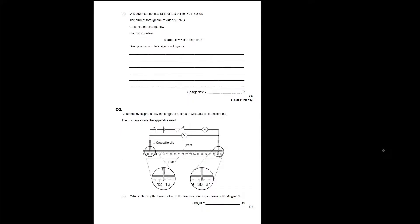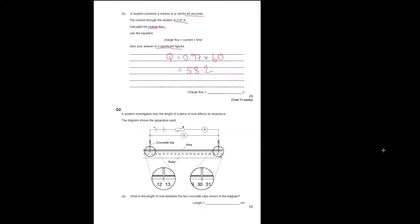A student connects a resistor to a cell for 60 seconds. The current through the resistor is 0.97 amps. Calculate the charge flow using Q = It, giving your answer to two significant figures. Substituting: charge = 0.97 × 60 = 58.2. Remember, time should be in seconds. That's three significant figures, so because it's 0.2, it rounds down — charge flow is 58 coulombs.